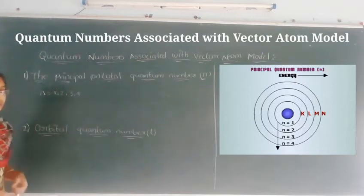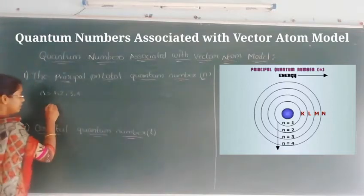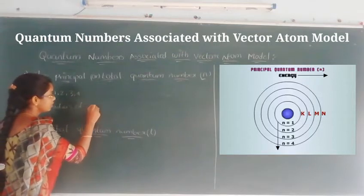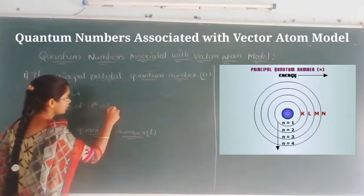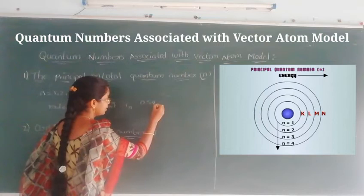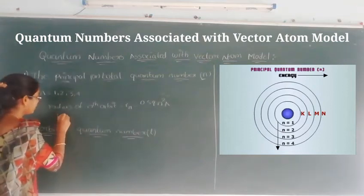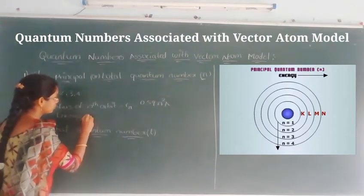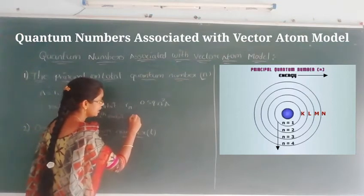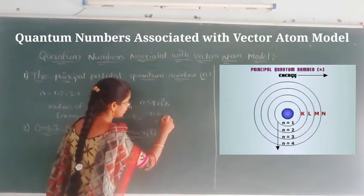The principal quantum number explains the radius and energy of the orbit. The radius of the nth orbit is Rn = 0.529 n² Ångströms. The energy of the nth orbit is En = −13.6 / n² electron volts.